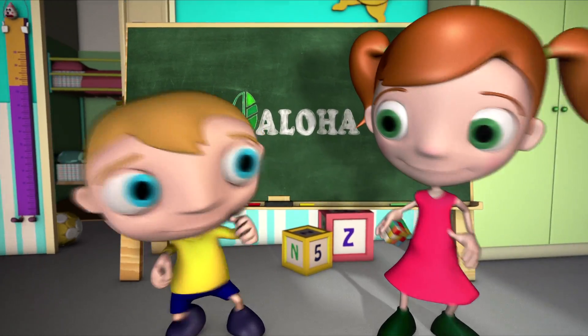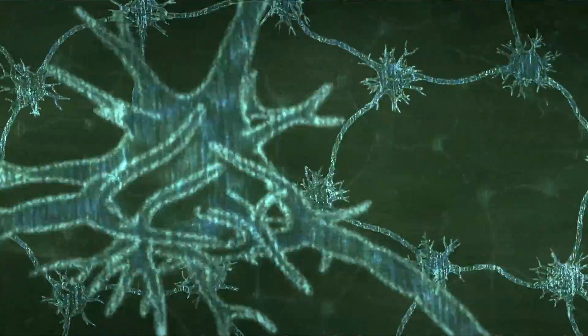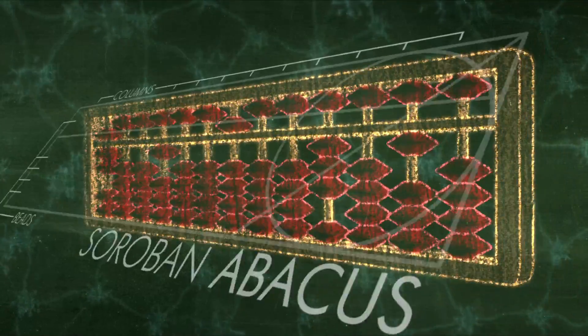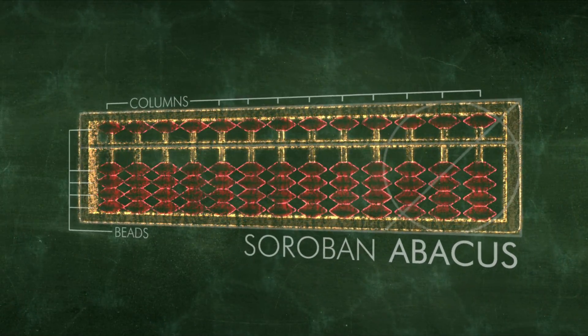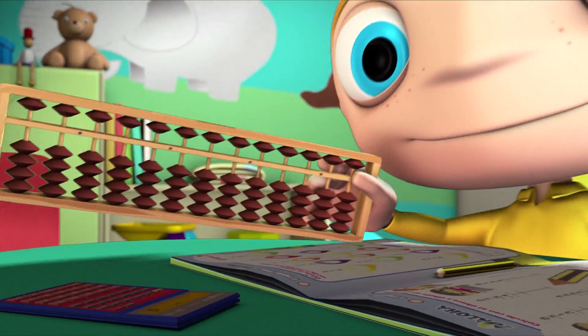The abacus, the earliest calculating device ever known, is the tool used by students in this program. This device consists of a rectangular structure with beads sliding on columns. At first, children learn to solve arithmetic operations by physically using the abacus.